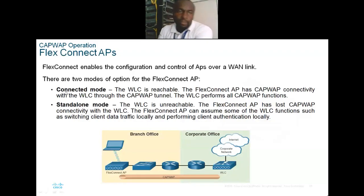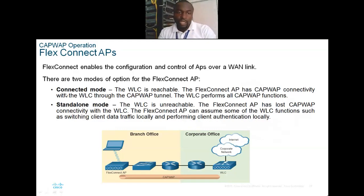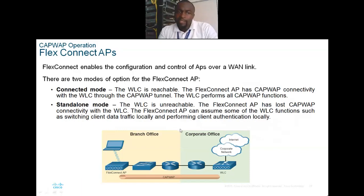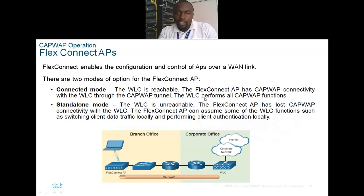FlexConnect AP enables configuration and control of an AP over a WAN link. It has two modes: connected mode, where the WLC is reachable and the flex AP maintains CAPWAP connectivity with the WLC, which performs all CAPWAP functions; and standalone mode, where if the WLC is unreachable, the flex connect AP can assume some WLC functions such as switching client traffic locally.